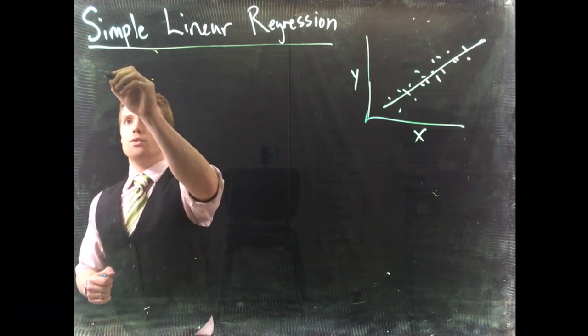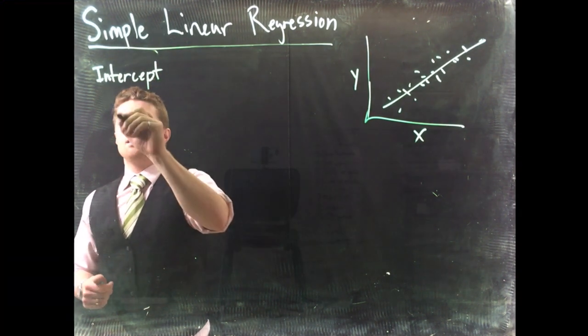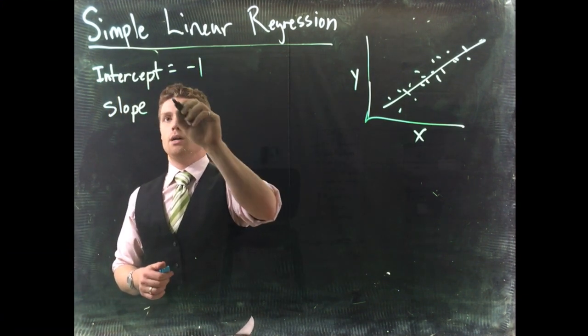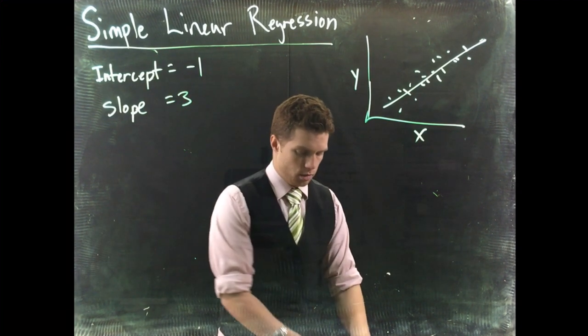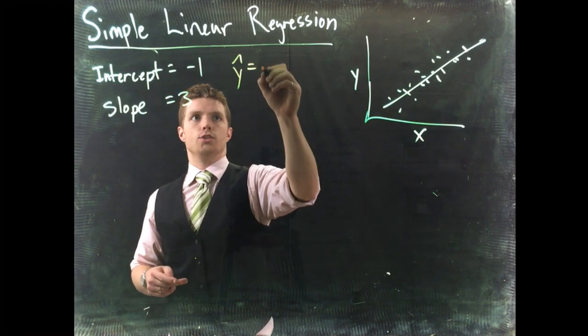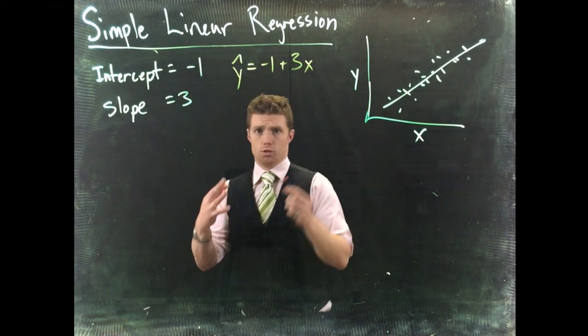And it's going to give you an intercept and a slope. So for this one, let's say the intercept is equal to like negative 1 and the slope is equal to 3. So then our equation is going to be like y hat is equal to negative 1 plus 3x. So it's going to give us that output.